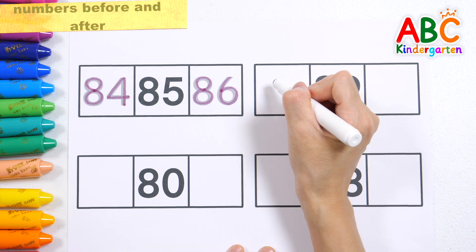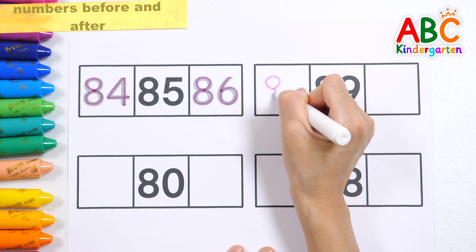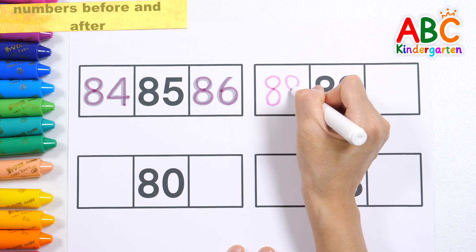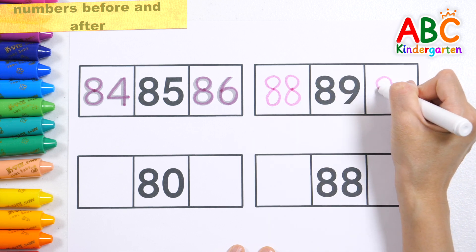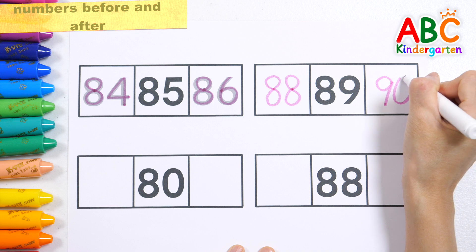The number that is one less than eighty-nine is eighty-eight. The number that is one greater than eighty-nine is ninety.